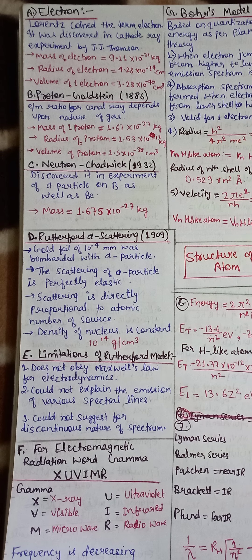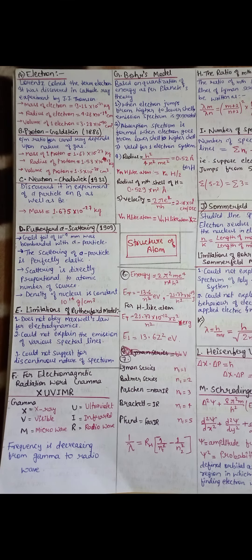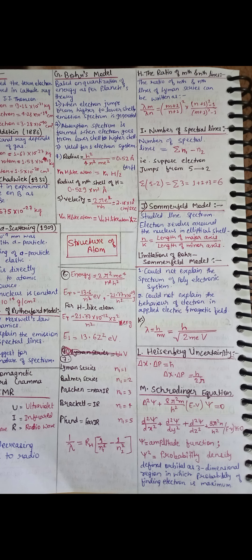For electromagnetic radiation, what is gamma? Bohr's model. And the ratio of M and N lines. Number of spectral lines.